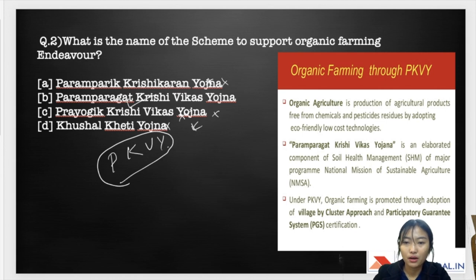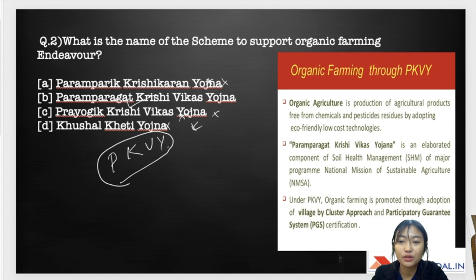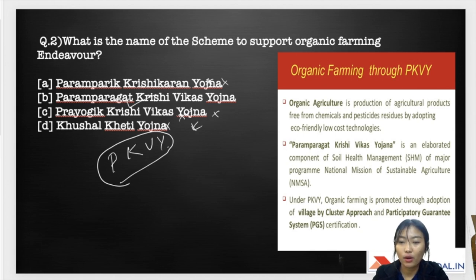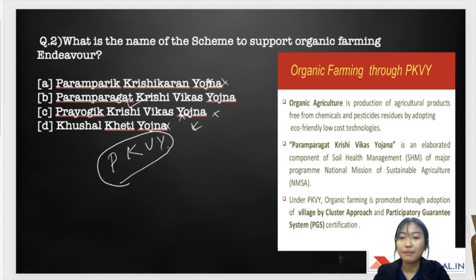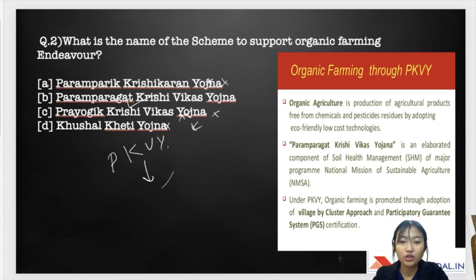PKVY — Paramparagat Krishi Vikas Yojana — is an elaborated component of Soil Health Management (SHM) under a major program called the National Mission for Sustainable Agriculture (NMSA). Under PKVY, organic farming is promoted through two methods: the village cluster approach, and the Participatory Guarantee System (PGS) certification.